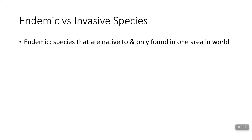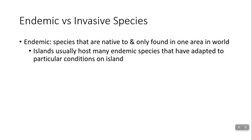Another thing to discuss is endemic species versus invasive species. Endemic species are not only native to an area, but usually they're only found in that one area in the world. Australia has a ton of endemic species — you don't find kangaroos naturally in South America. Islands tend to have a lot of endemic species as well, because islands have their own micro-habitats and micro-environments. As species adapt to those, they'll change and become different enough from wherever they originated that they're no longer able to interbreed — they're a different species, only found in that environment because they're highly adapted to it.